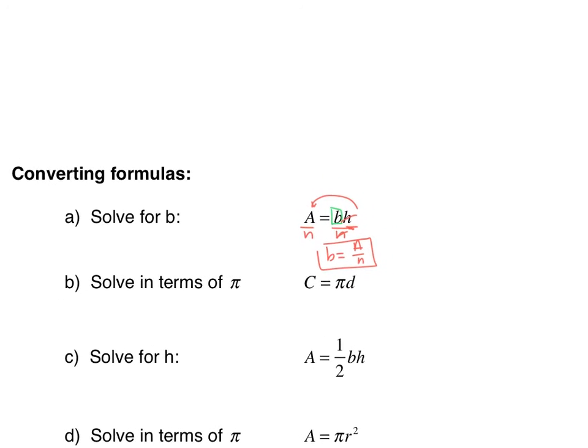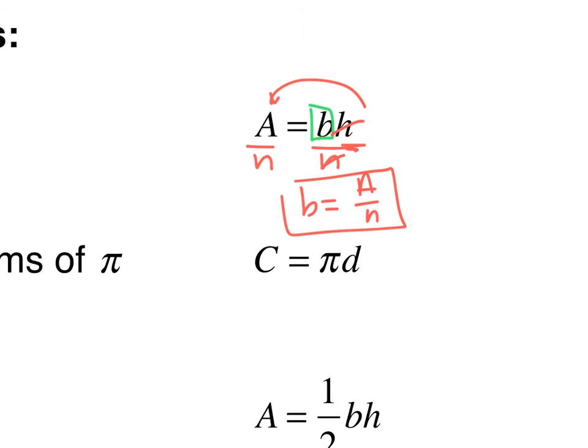For B, I want to solve for pi. So it's the exact same as the way before. I'm multiplying my pi and my D and I want to solve for pi. So I simply divide both sides by D. So I get pi equals C over D.